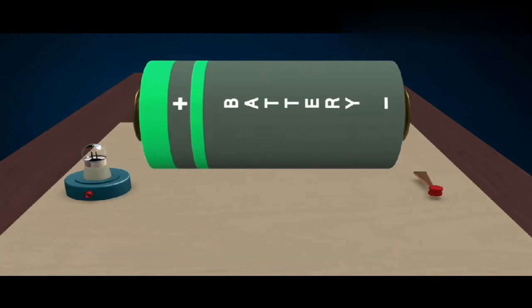However, voltage is just potential. To do any work, the electricity must first flow through a conductor, such as a copper wire.